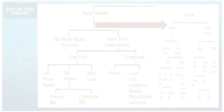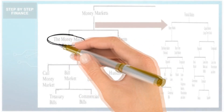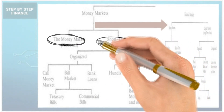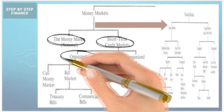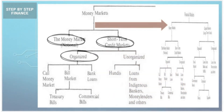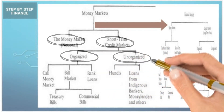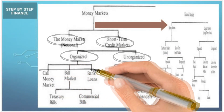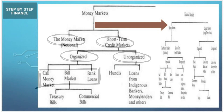The money market is basically divided into two types: money market and short-term credit market. The short-term credit market is again of two types: organized and unorganized. The organized market is divided into three parts: call money market, bill market, and bank loan.